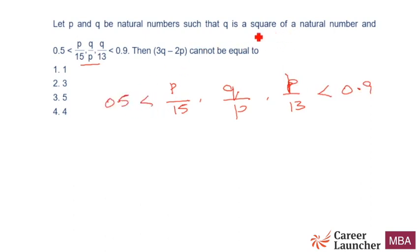Since Q upon 13 must be between 0.5 and 0.9, and Q is a square of a natural number, Q should be less than 13. What natural number squares are available which are less than 13? 1, 4, 9. 1 is ruled out because 1/13 is less than 0.5. 4/13 is also less than 0.5, so Q equals 9.